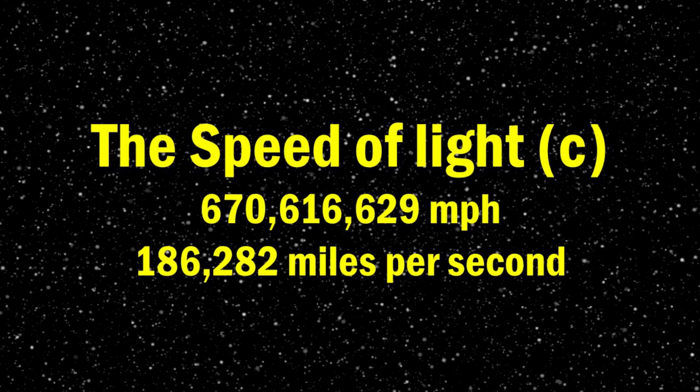Let's talk about light speed. What is light speed? In engineering we denote light speed as C. Light speed is literally 670,616,629 miles per hour, or 186,282 miles per second. It's so fast it only takes light 1.3 seconds to travel to the moon — it took the Apollo missions 3 days to do the same thing, and they were traveling at 25,000 miles per hour.